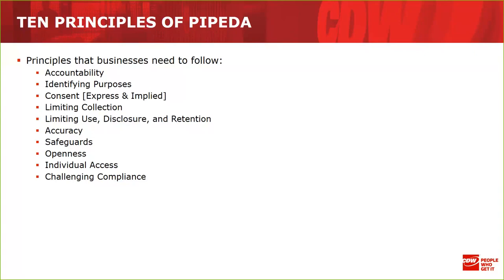Express consent also applies to employees using company-owned media — there must be actionable information presented to them stating acceptable use, unacceptable use, enforced policies, and what they need to be aware of. Fourth: Limiting collection — PII collection must be limited to what is needed for the purpose of that collection, gathered by fair and lawful means. You can't develop a mobile application that collects more than you need without disclosing those collection methods via a legal banner.